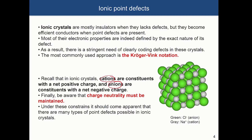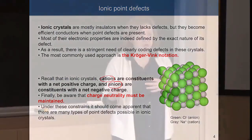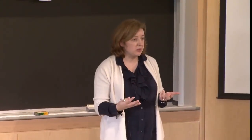By changing the concentration of different types of defects, you can change the conductivity of these materials. You can also change their color. But in general, if you form some kind of intrinsic defects to keep charge neutrality, you have to compensate one type of defect with another. In ionic crystals, intrinsic defects typically happen in pairs or in different combinations.